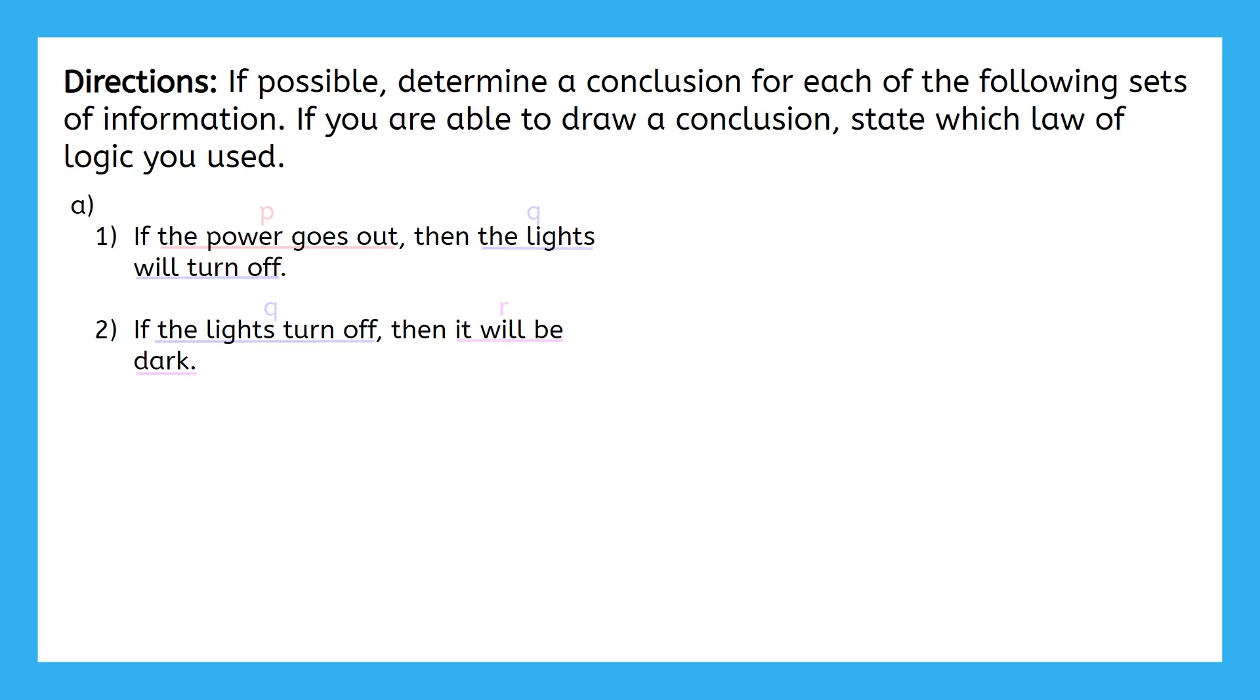I went ahead and labeled my hypotheses and conclusions, and it helped me see that the first statement is P implies Q, and the second statement is Q implies R. This is following the structure of the law of syllogism. So, using the law of syllogism, I can conclude P implies R, which is, if the power goes out, then it will be dark.